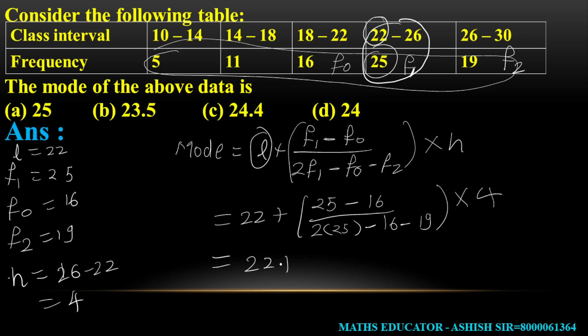Multiplying by 4, we have 22 plus (25 minus 16) upon (50 minus 16 minus 19) into 4. So 22 plus 9 divided by 15, into 4.